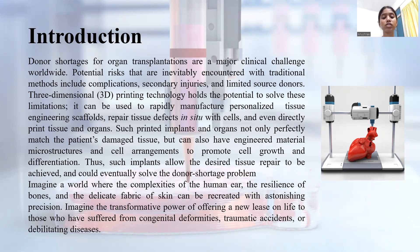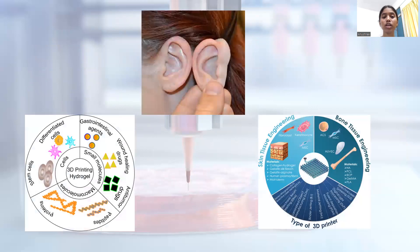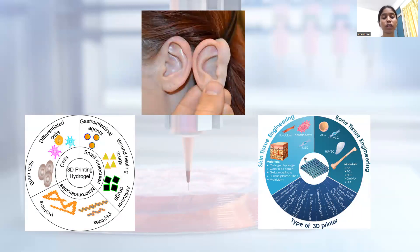Imagine a world where the complexities of the human ear, the resilience of the bones, and the delicate fabric of the skin can be recreated with astonishing precision. Imagine the transformative power of offering a new lease on life to those who have suffered from congenital deformities, traumatic accidents, or debilitating diseases. Here you can see the artificial or 3D printed ear, differentiated cells, gastrointestinal agents, wound healing drugs, and stem cells that can be created through 3D printing technology, along with bone tissue engineering and skin tissue engineering as key applications.